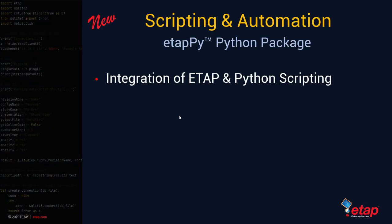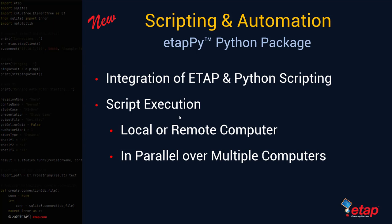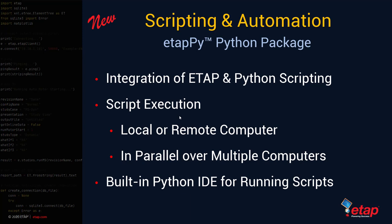Let's talk about scripting and automation, or ETAP-py. This Python scripting and automation capability is brand new in ETAP at a level not previously included. The Python-based scripting and API allows you to execute the script either locally or on a remote computer — executing on the machine you're working on or in parallel over single or multiple computers. This allows you to offload the workload onto either a single machine or multiple platforms, especially if you're performing studies on multiple projects in parallel. It also includes a built-in Python IDE (integrated development environment) for running scripts, so you do not need to purchase a separate Python editor or interpreter.